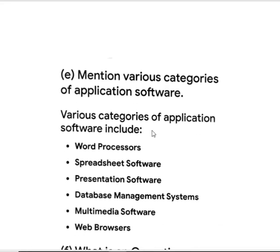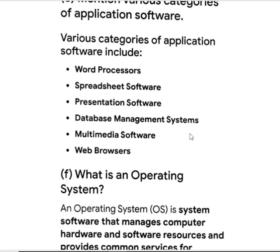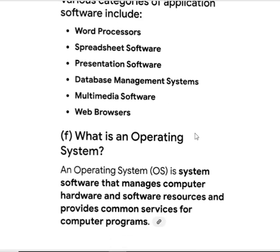Mention the various categories of application software: word processor, web browser, and database management system.